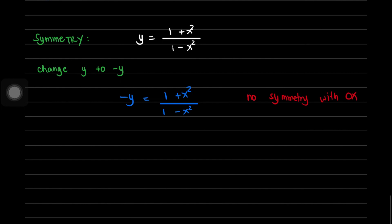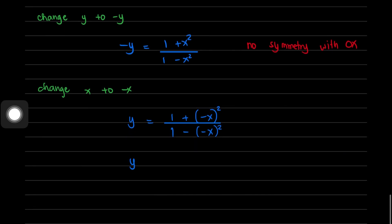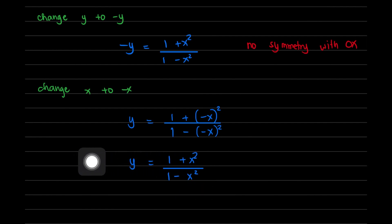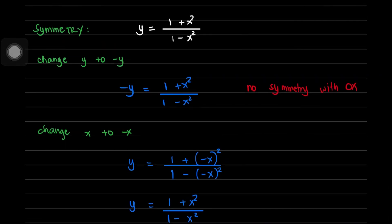Next, we change x to negative x: y = (1 + (-x)²)/(1 - (-x)²), which simplifies to y = (1 + x²)/(1 - x²). This is identical to the original equation, so there is symmetry with respect to the y-axis.